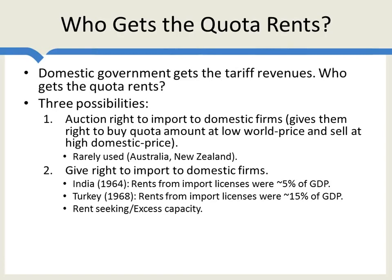Another way that these rents can be dissipated is through excess capacity. For example, if the government says it will give rents in proportion to how much domestic firms are already producing, this gives domestic firms an incentive to produce overcapacity — wasted investment in capacity designed simply to grab those rents.